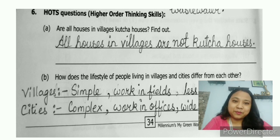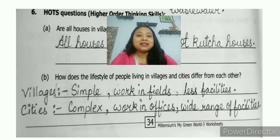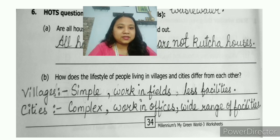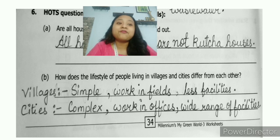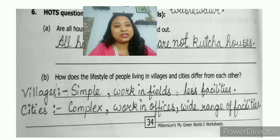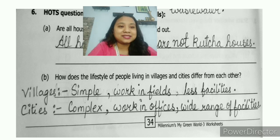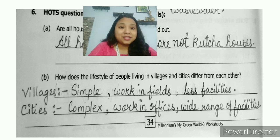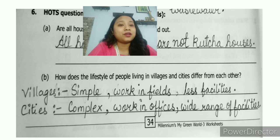Question 6B: How does the lifestyle of people living in villages and cities differ from each other? For villages: life is very simple, people work in fields and have very less facilities. For cities: life is very complex, people work in offices and in the cities they have a wide range of facilities — starting from better internet connections, better electricity supply, and better modes of transportation. This is the comparison between how cities and villages differ from each other.